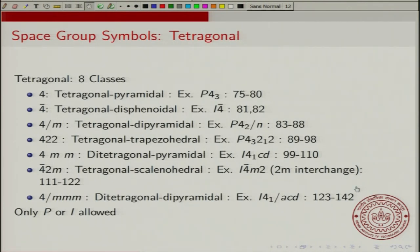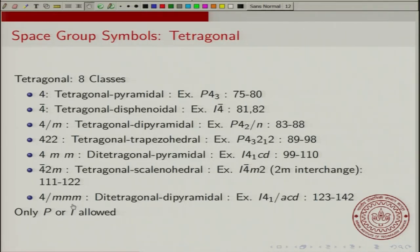The tetragonal classes involve quite a large number of space groups, going all the way from 75 to 142. In the tetragonal class, only primitive or body-centered are allowed — you cannot have a face-centered tetragonal or a C-centered tetragonal.